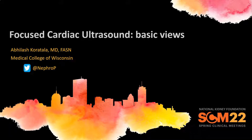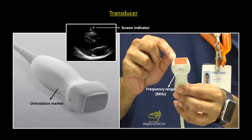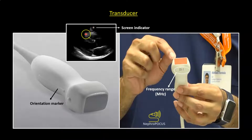In this video I will talk about the basic views of focused cardiac ultrasound. A phased array transducer, also known as the cardiac probe, is used to image the heart. It is a low frequency transducer which means it can penetrate deeper, and the piezoelectric crystals are arranged in the center of the probe, which gives a pie-shaped image.